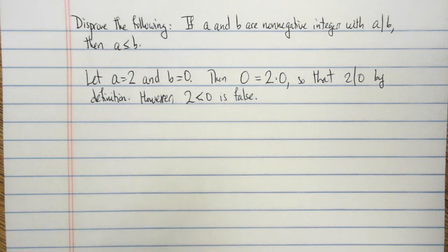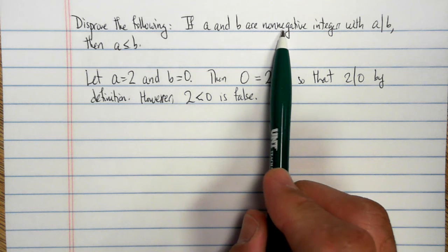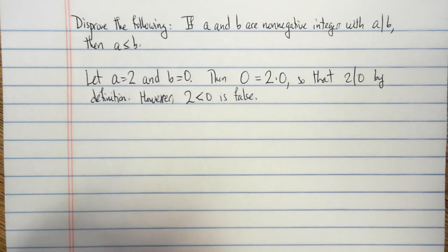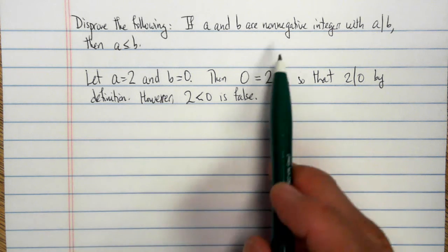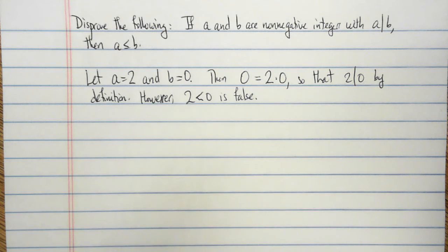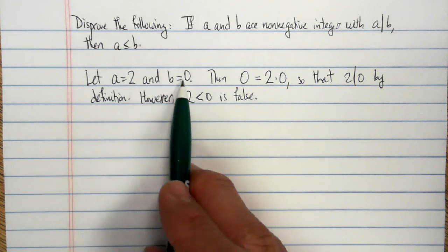So there is my one counterexample. If I want to show that something is false, I don't have to list every possible counterexample. I just need to provide one. Now this can be salvaged if I change the word non-negative to positive, then the statement is true. But if I have non-negative here, then the statement is false, because B could be equal to 0.